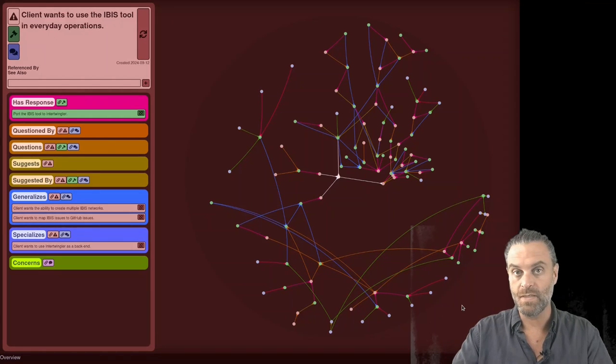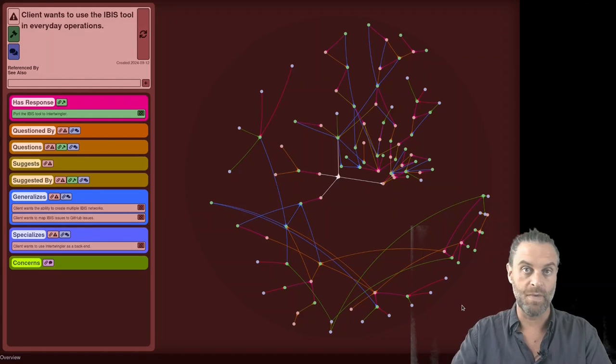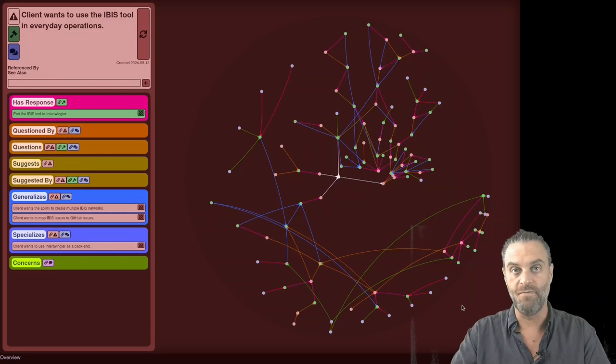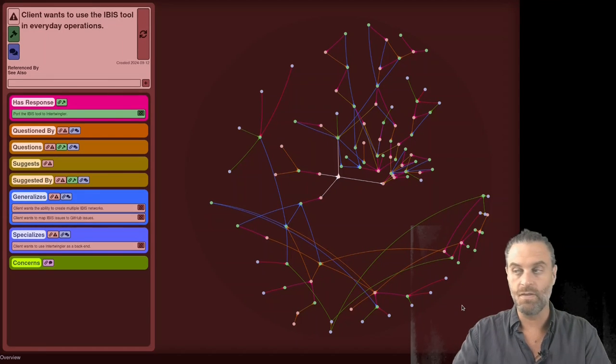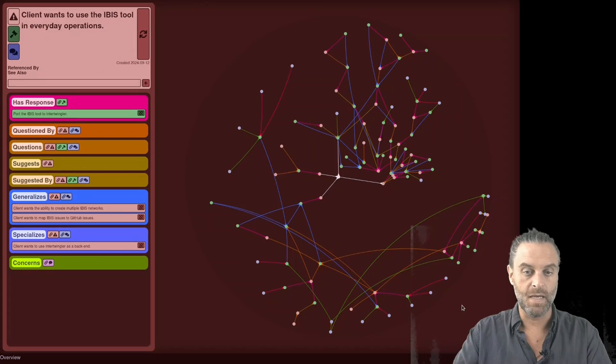This is a thing called IBIS or Issue Based Information System. It was invented by a couple of guys in the 60s named Werner Kunst and Horst Riddle. They did their thing on index cards, on paper, but this technique has been digitized going back to the 80s.